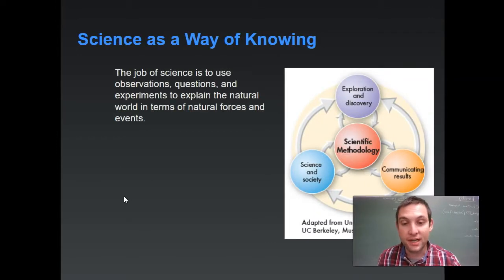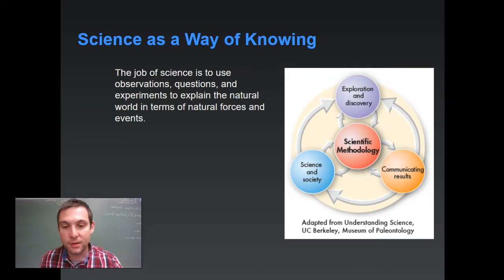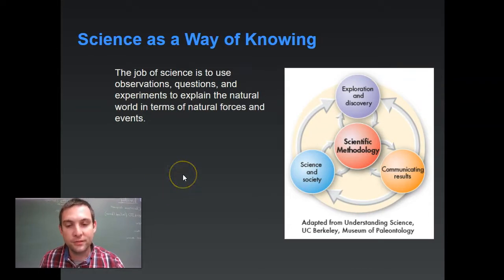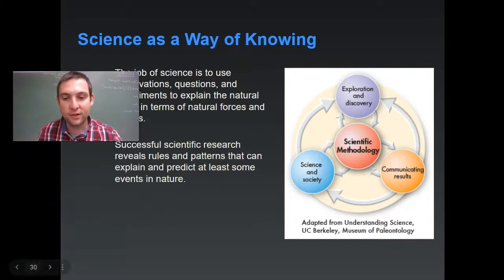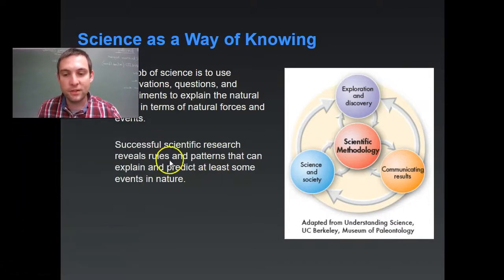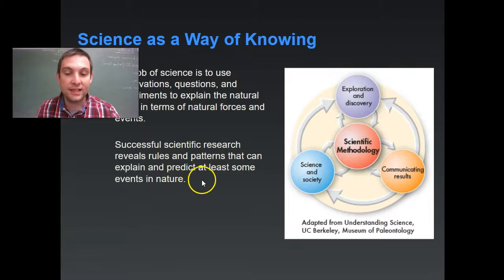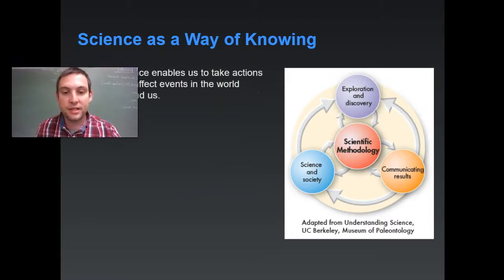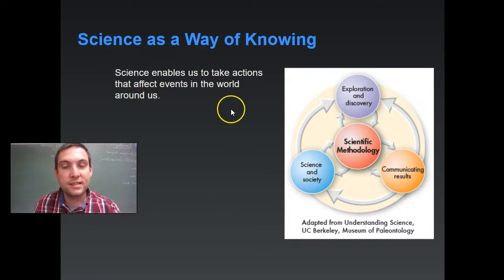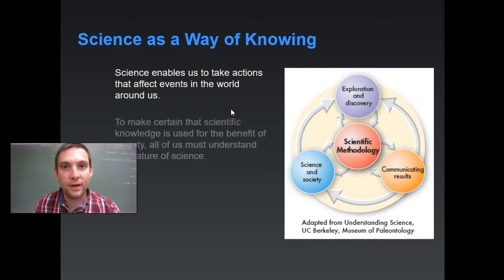The job of science is to use observations, questions, and experiments to explain the natural world in terms of natural forces and events. Successful scientific research reveals rules and patterns that can explain and predict at least some events in nature. Science enables us to take actions that affect events in the world around us.